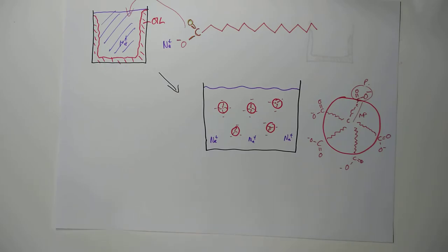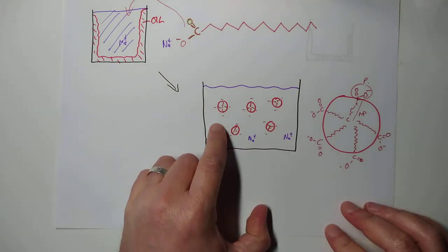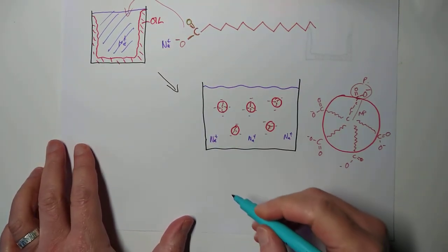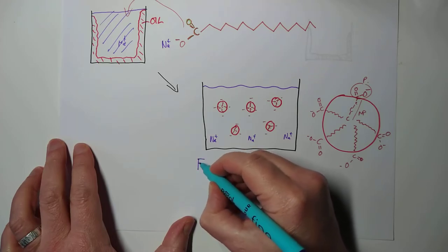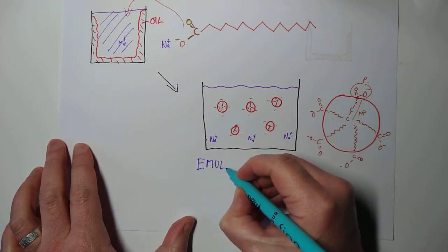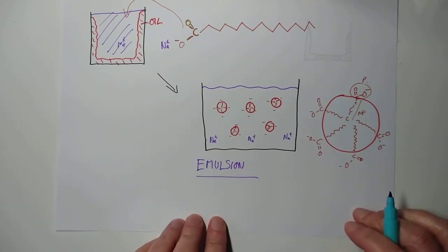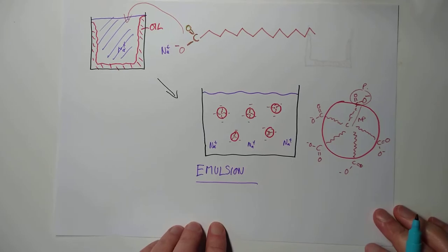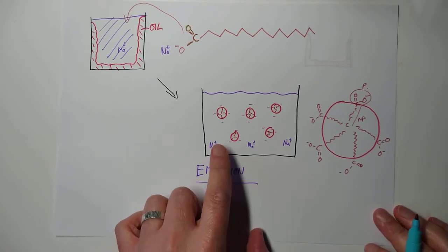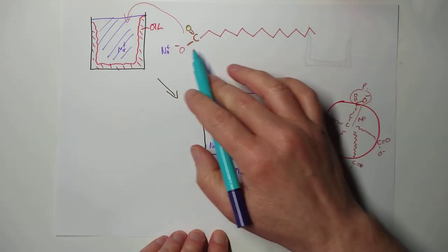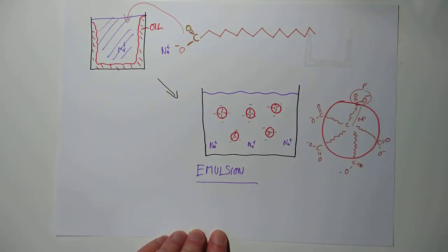When you have dispersed a non-polar substance in a polar substance, then you have created what is called an emulsion. Examples of emulsions include milk, the yolk of an egg, types of paint. These are all called emulsions because they are making two things that would not normally mix, mix due to the presence of a special chemical. In this case, a soap molecule.